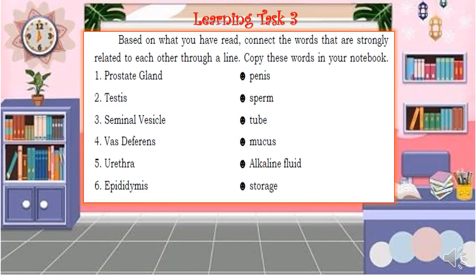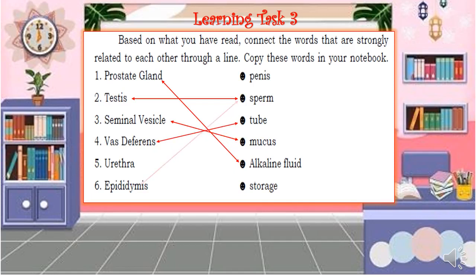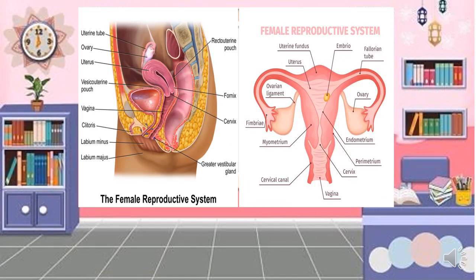The answers for the word connections: prostate gland is related to alkaline fluid; testes is related to sperm; seminal vesicle is related to mucus; vas deferens is related to tube; urethra is related to penis; and epididymis is related to storage.